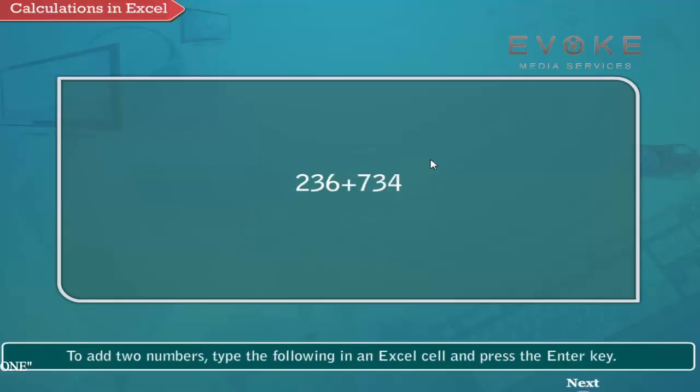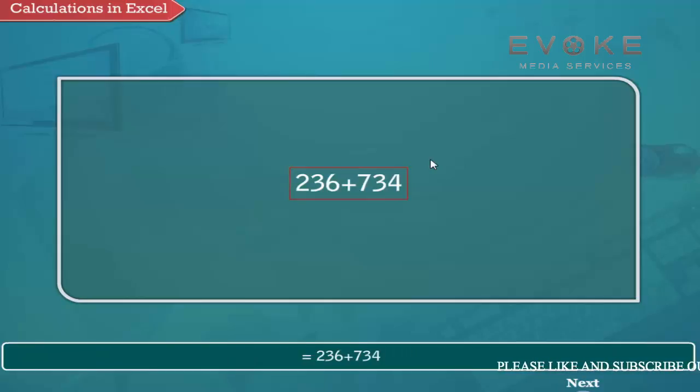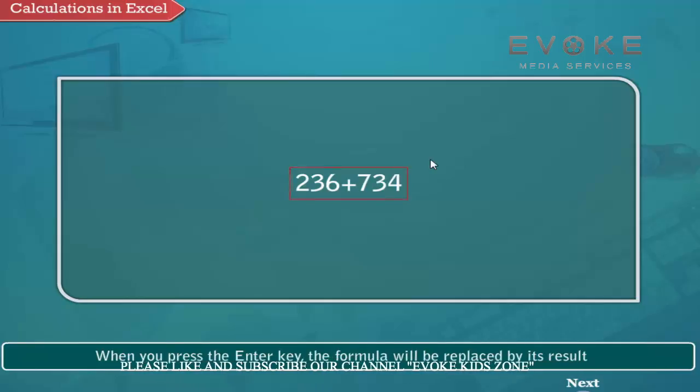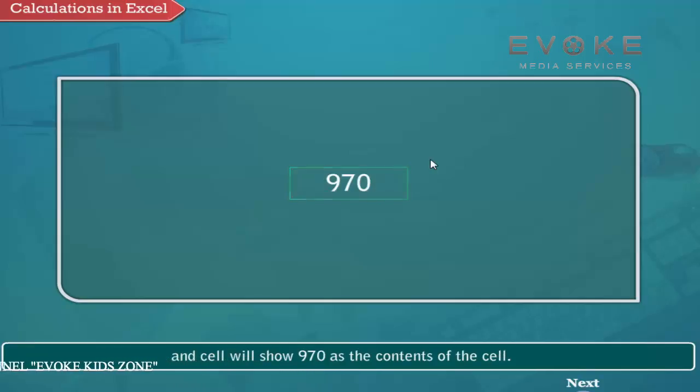To add two numbers, type the following in an Excel cell and press the Enter key: equals to 236 plus 734. When you press the Enter key, the formula will be replaced by its result and cell will show 970 as the contents of the cell.